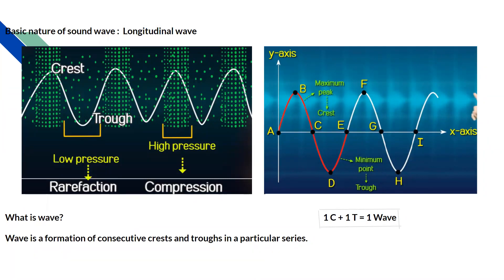The basic nature of a sound wave is the longitudinal wave. Longitudinal wave means that the particles move in the direction the wave is propagated. If the particles move, they create two types of regions: the region of high pressure and the region of low pressure. The low pressure region is where the particle density is very low, and the high pressure region is where the particle density is very high.